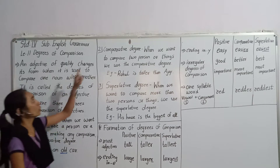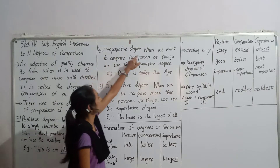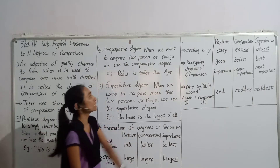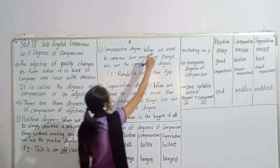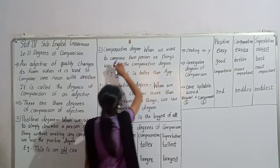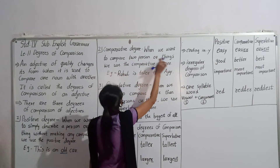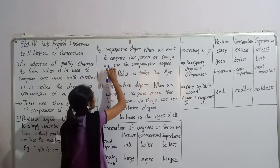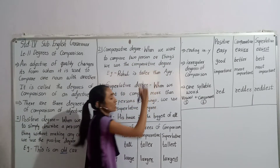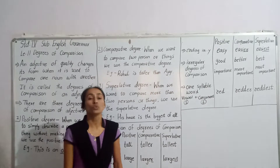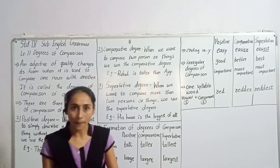Now number two: comparative degree. When we want to compare two persons or things, we use the comparative degree. Just two people — we have two people — and we compare them.